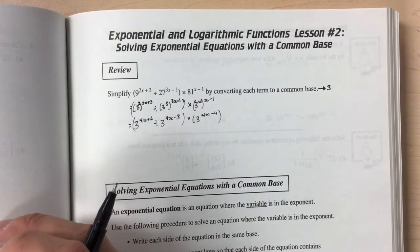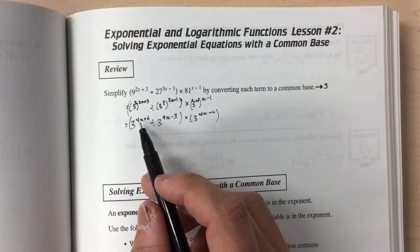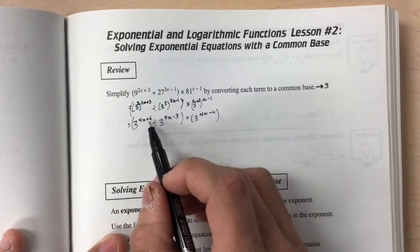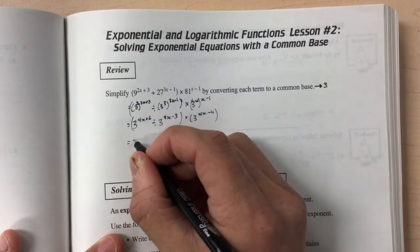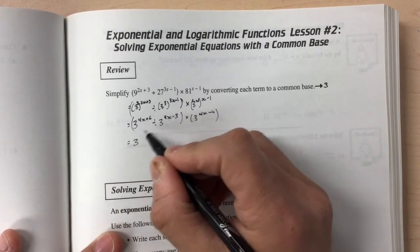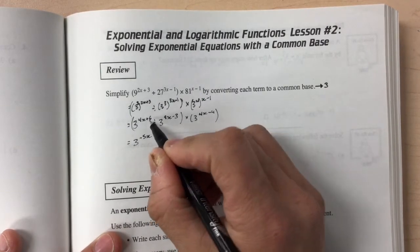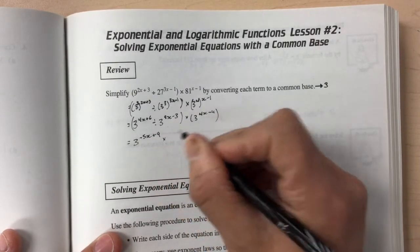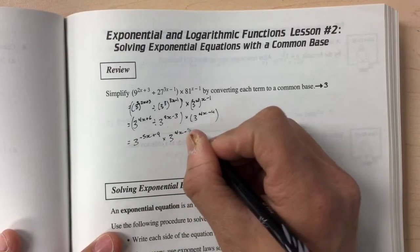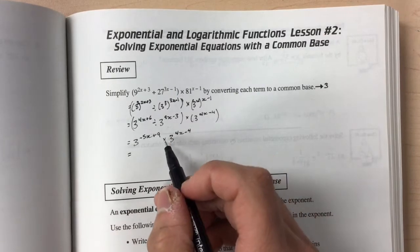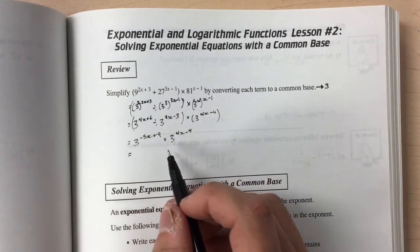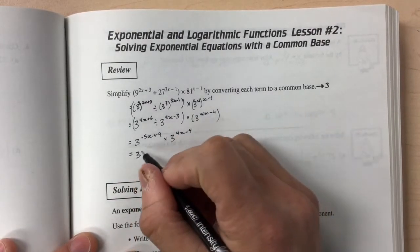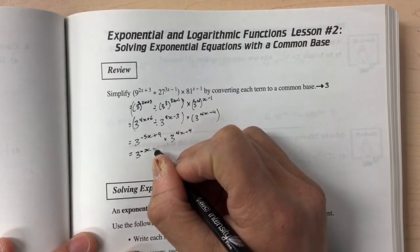My next step is to continue using my power laws. I'm going to be combining 4x plus 6, 9x minus 3, and eventually 4x minus 4. The first thing we can do is carry out our quotient law and subtract our exponents. So I'll have 3 to the power of 4x minus 9x, which leaves negative 5x, and positive 6 subtract negative 3 leaves positive 9. Multiplying by 3 to the power of 4x minus 4 — since we're multiplying bases that are the same, we add exponents — this leaves me with 3 to the power of negative x plus 5.